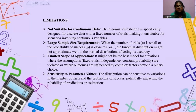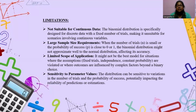Limitations of binomial distribution. Not suitable for continuous data: the binomial distribution is specifically designed for discrete data with a fixed number of trials, making it unsuitable for scenarios involving continuous variables. Large sample size requirements: when the number of trials N is small or the probability of success P is close to 0 or 1, the binomial distribution might not approximate well to the normal distribution, affecting its accuracy. Limited scope of applications: it might not be the best model for situations where the assumptions are violated or where outcomes are influenced by complex factors beyond a binary choice. Sensitivity to parameter values: the distribution can be sensitive to variations in the number of trials and the probability of success, potentially impacting the reliability of predictions or estimations.